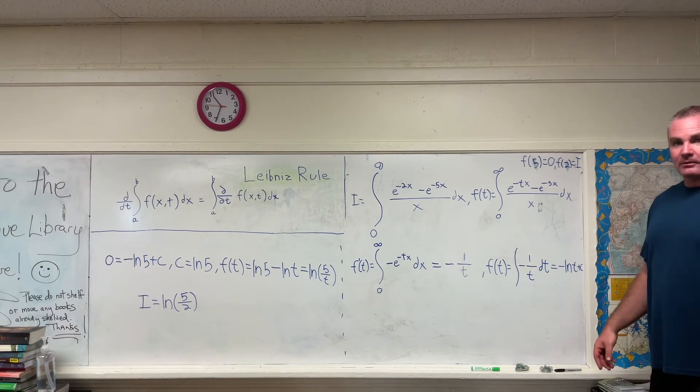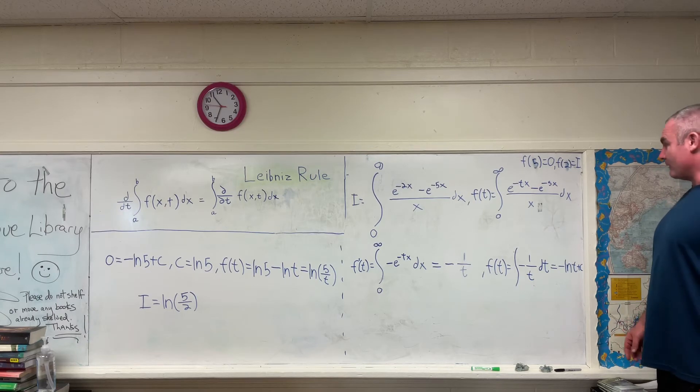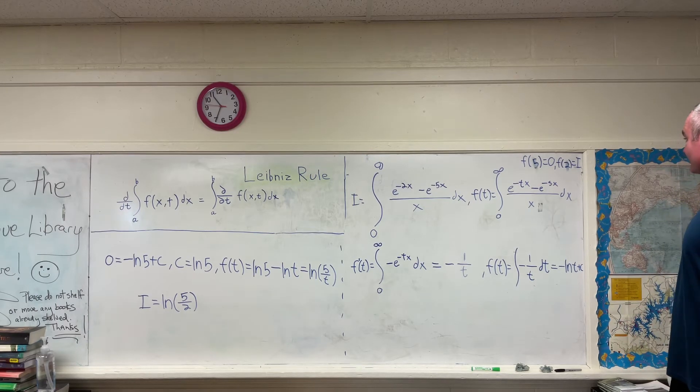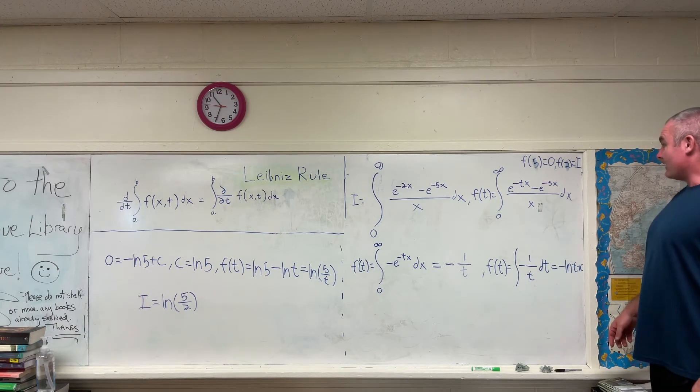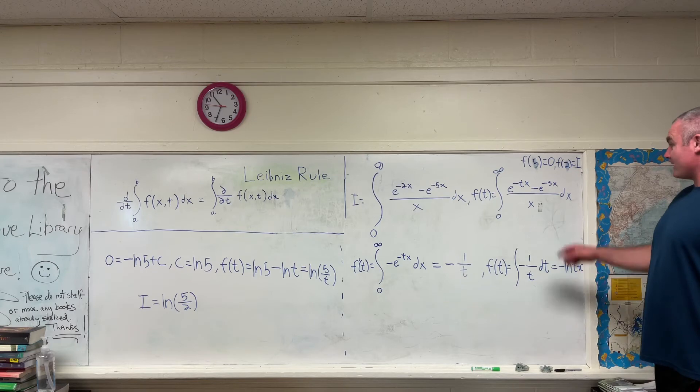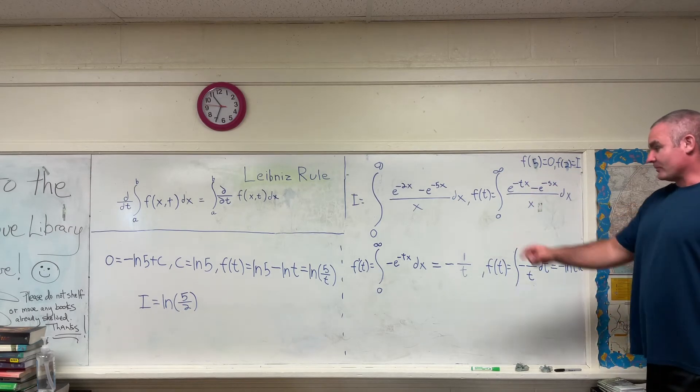And if you integrate with respect to t, integrate with respect to anything, and you integrate a constant, you're going to get 0. So, this whole part drops out, leaving you with nothing but having to differentiate with respect to t e to the negative tx over x. And that's what you get if you do so.